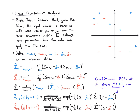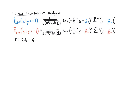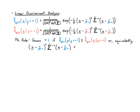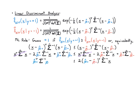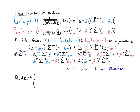We then apply the ML rule, simplifying by taking logs to avoid numerical issues with small exponent values. After opening up the exponent, multiplying through, and canceling identical terms, we group terms depending on x separately from constants. The result is a linear classifier: a vector times x compared to a constant. This is the LDA classifier — it treats the data as Gaussian with the same covariance matrix and different mean vectors.